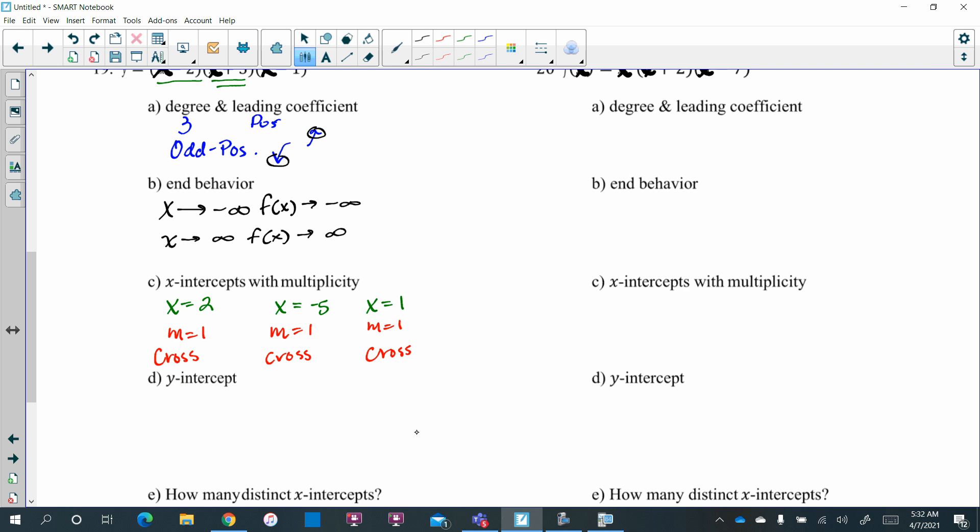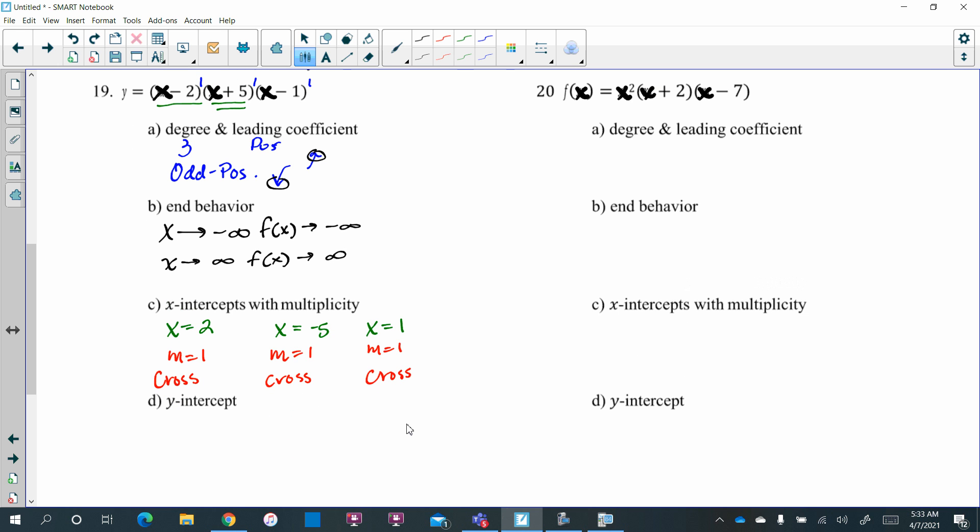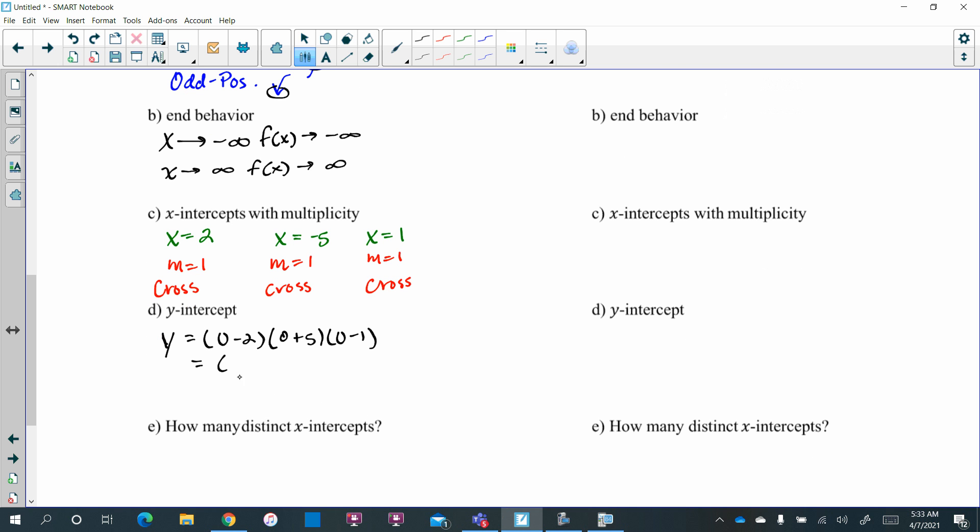And so now to find the y-intercepts, we're going to plug in 0 for x and solve for y here. So y equals 0 minus 2, parentheses, and then 0 plus 5, plus that parentheses, and 0 minus 1, close that parentheses. So this gets simplified to negative 2 times 5, which is negative 10, times negative 1, which is positive 10. So the y-intercept is the ordered pair, 0 comma 10.